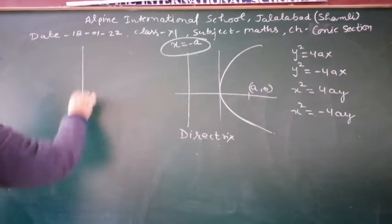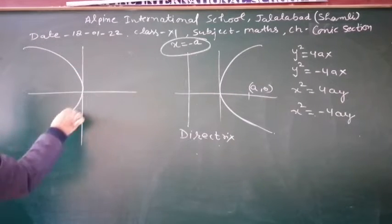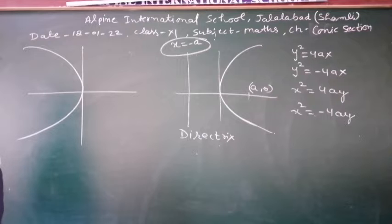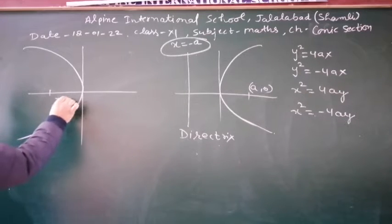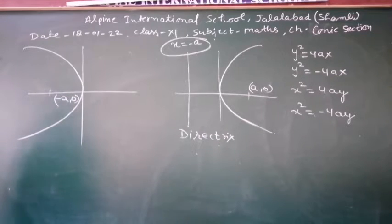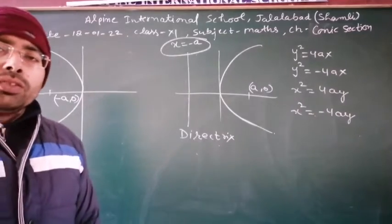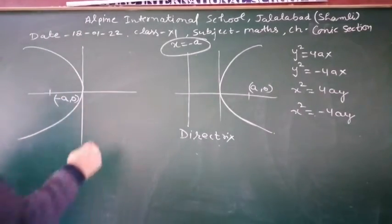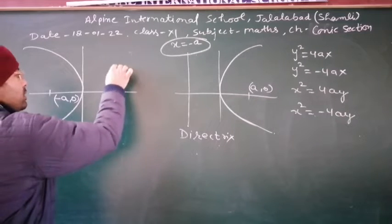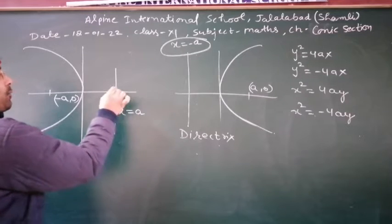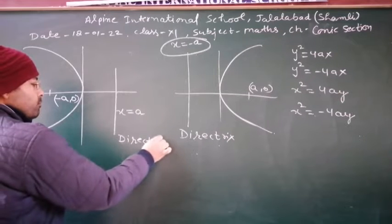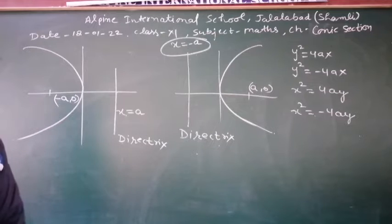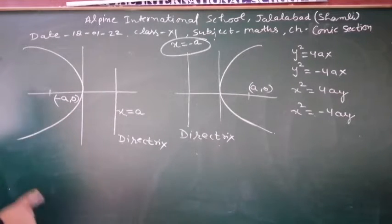Second type of parabola: the focus will be on the negative side of the x-axis, meaning the coordinate of the focus will be (−a, 0). The directrix vertex is at a distance on the positive x-axis side. So the equation of the fixed line — the directrix — will be x = a.